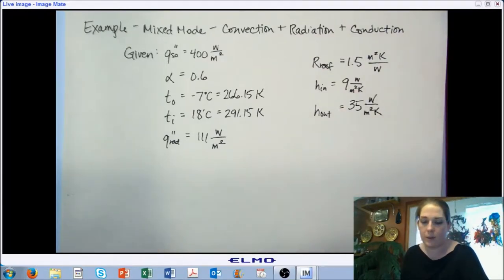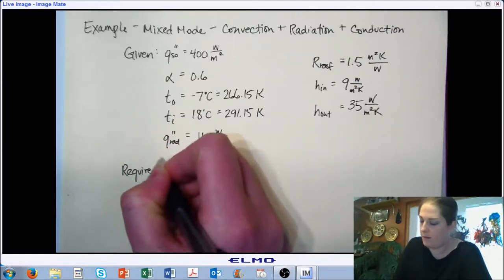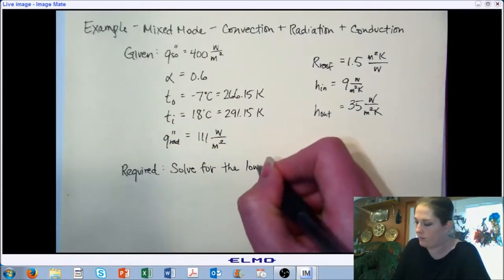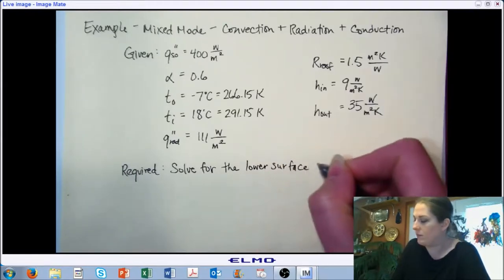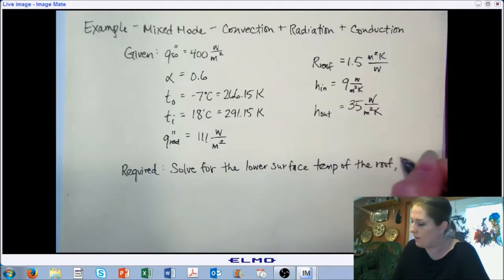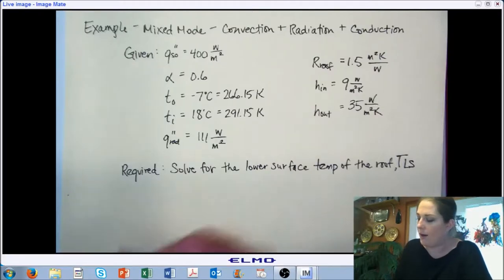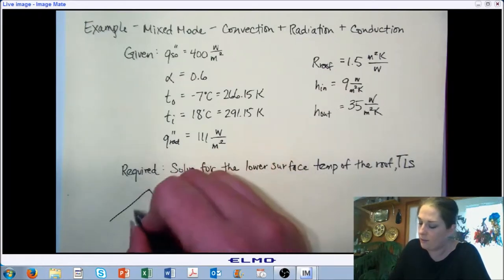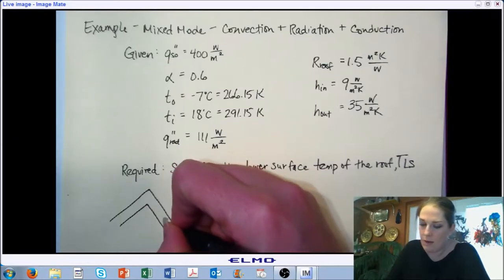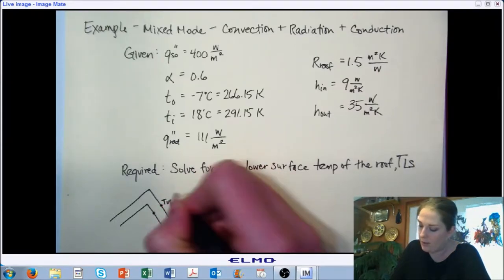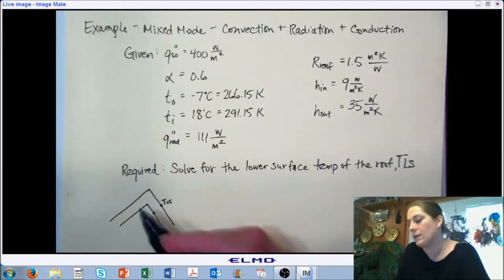There's a list of the things that were given. We're required to solve for the lower surface temperature, which we'll denote as T sub LS. Let's start with a sketch — this is our roof. It doesn't matter the dimensions of the roof because we can work this problem without knowing them. There is some structure: an upper surface and a lower surface, with the temperature of the lower surface being what we're asked to solve for.